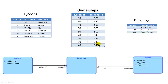On the Ownership side, when you are talking about an ownership, you are talking about a particular tycoon having a stake in a particular building. Therefore every row of Ownership is connected to one tycoon and one building. You cannot have an ownership without knowing who owns it or which building is involved — that doesn't make sense. So the line near Ownership is solid. As already discussed, the primary key for Ownership is Tycoon ID + Building ID, so there is key migration on both sides. This is what tells us, just by looking at the diagram, that the primary key for Ownership is the combination.